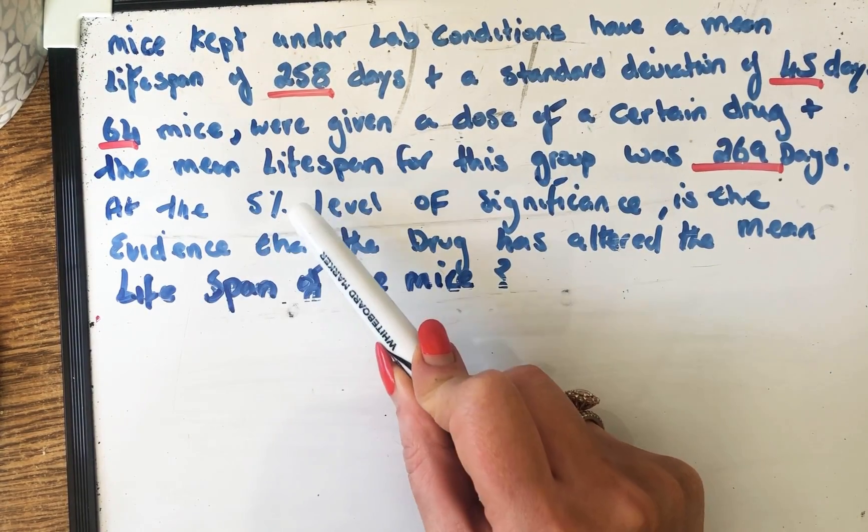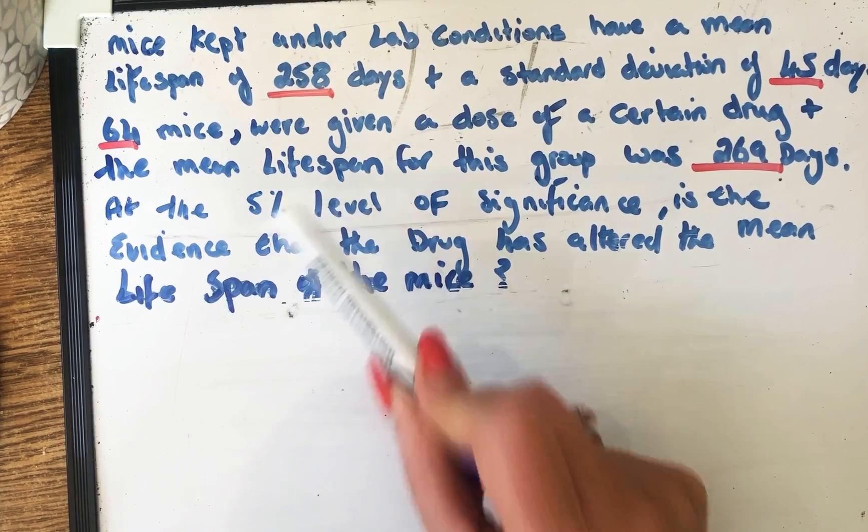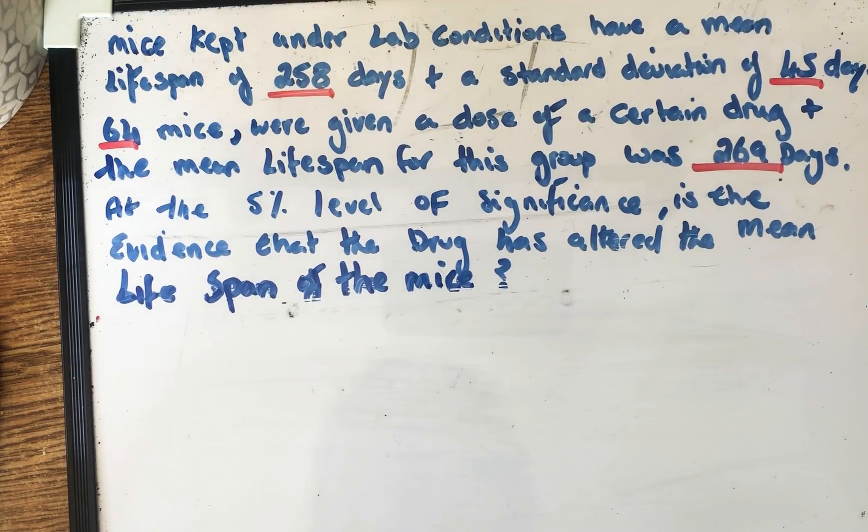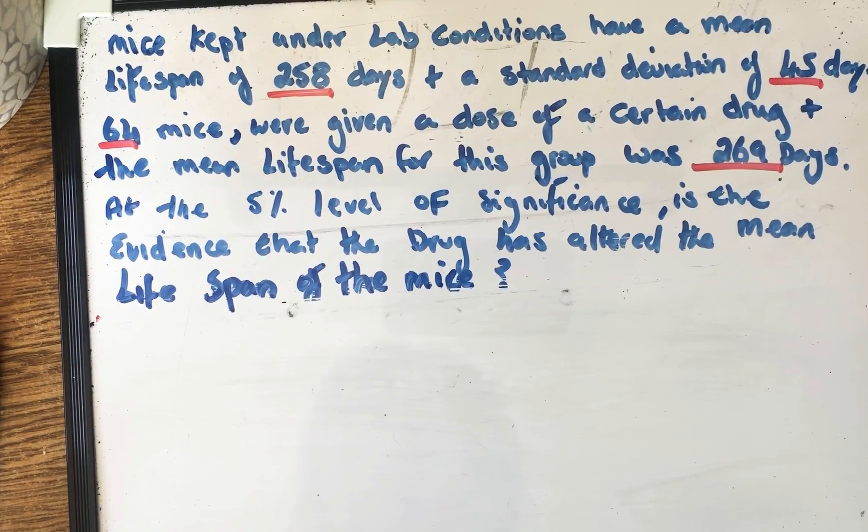At the 5% level of significance, and of course this is our alpha which I told you, you don't have to worry about because it's in the question as you can see. Is there evidence that the drug has altered the mean lifespan of the mice?